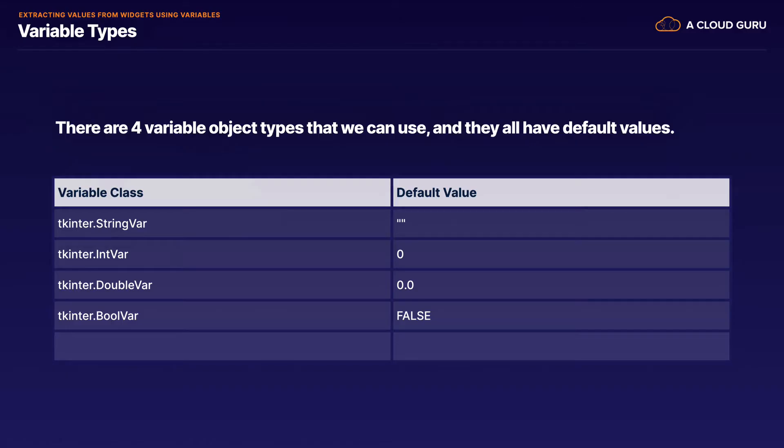Digging into our variable types, we have four main variable types that we're going to be using. They're based off of the class from the tkinter module. We'll have StringVar, IntVar, DoubleVar — which is going to be our floats — and BooleanVar. They all have default values of empty string, zero, zero point zero, and false.